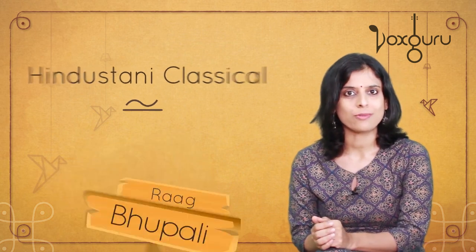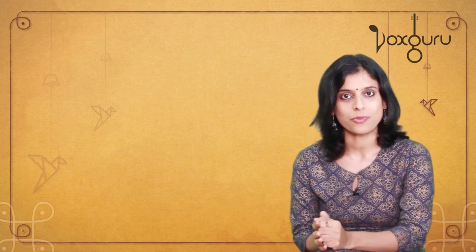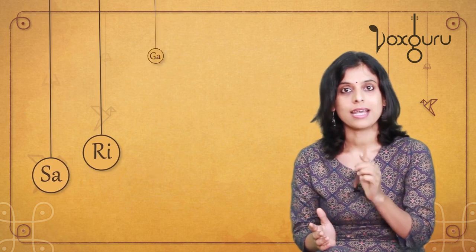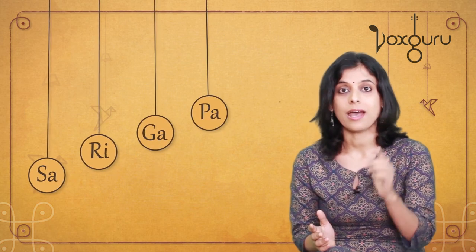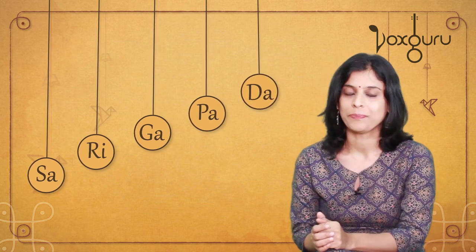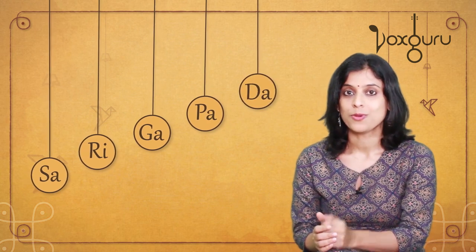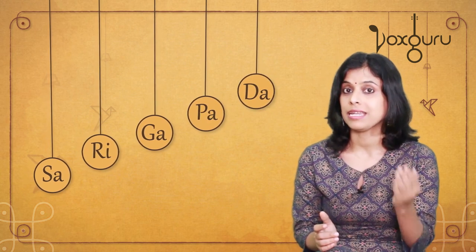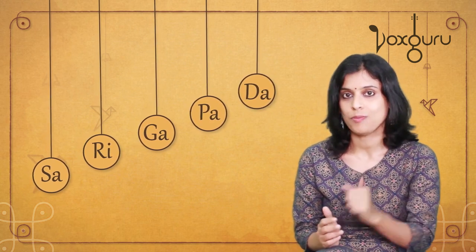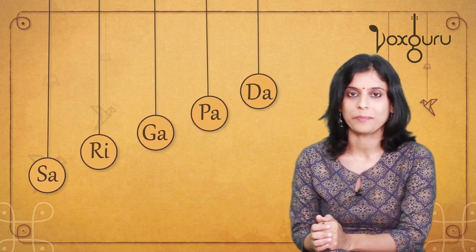As you might have observed, Mohanam does not use all the seven swaras — it uses only five swaras: Sa, Ri, Ga, Pa, and Dha. So Ma and Ni are omitted in Mohanam.